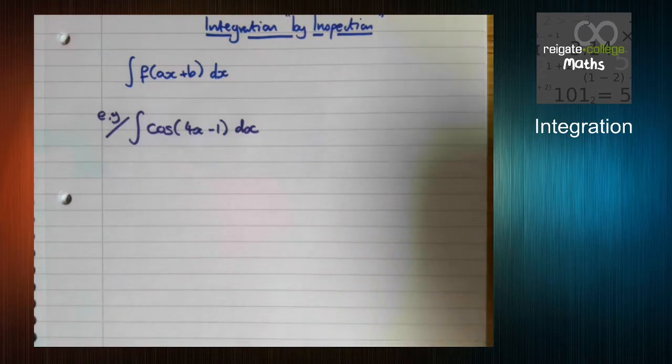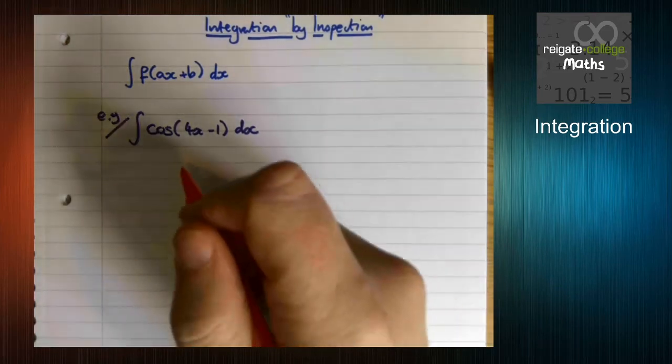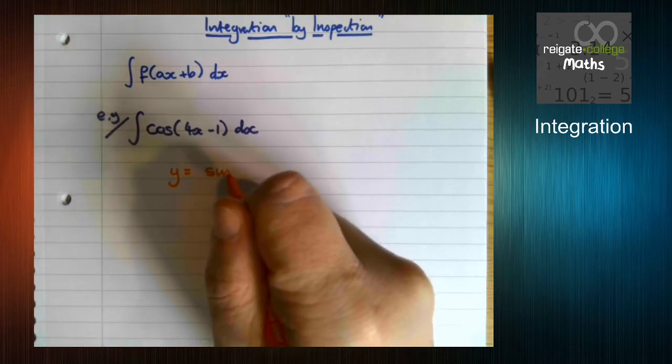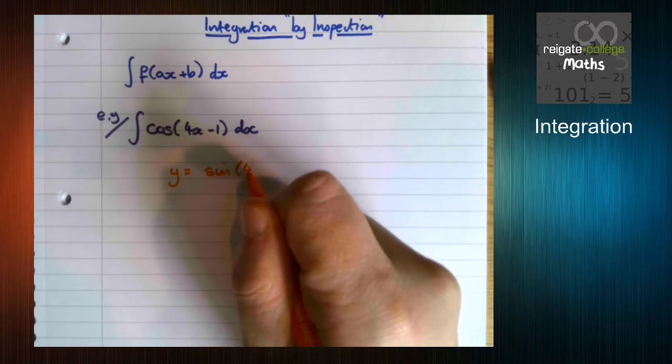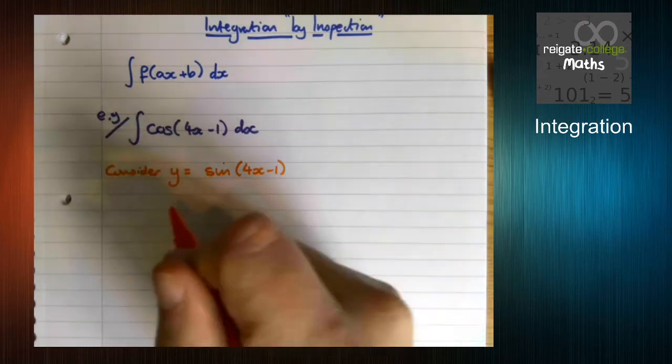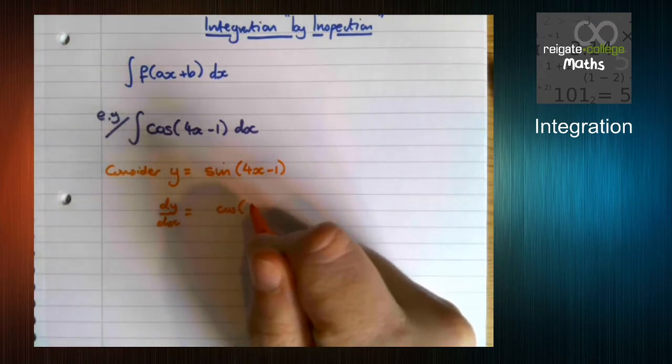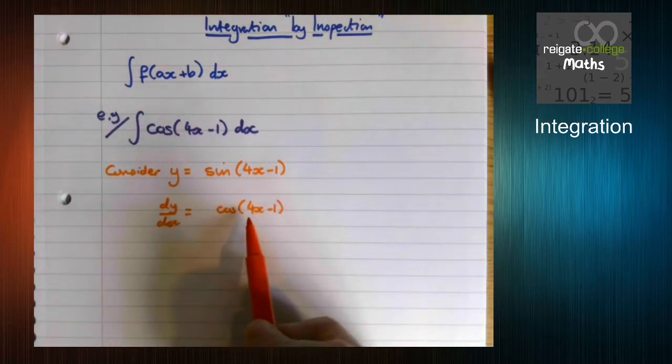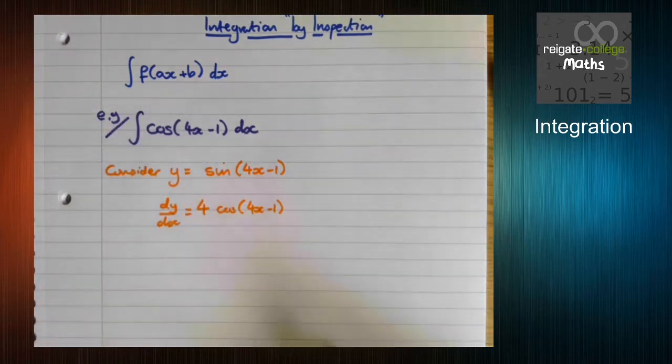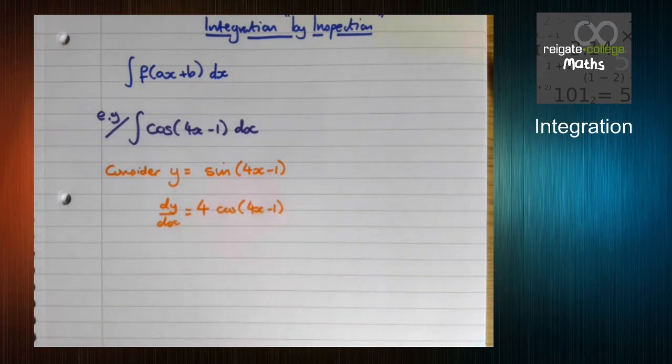Like before we need to think about what could differentiate to get us cos of 4x minus 1. Well we know that sine differentiates to cos. So let's start by thinking about sine of 4x minus 1. If we differentiate that, sine goes to cos, the bracket stays there, and then we times by the derivative of the bracket. Now in this case it's the coefficient of x. But later on when we look at a video on the reverse chain rule, we'll generalize this idea even further.